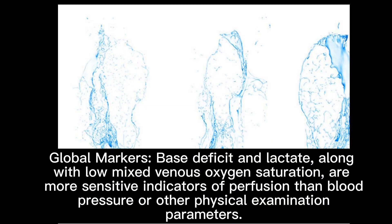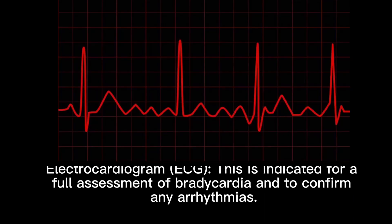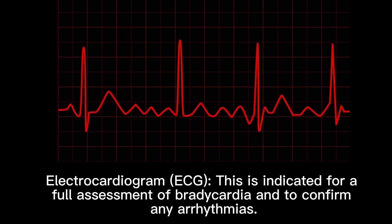Global markers such as base deficit and lactate, along with low mixed venous oxygen saturation, are more sensitive indicators of perfusion than blood pressure or other physical examination parameters. Electrocardiogram (ECG) is indicated for a full assessment of bradycardia and to confirm any arrhythmias.